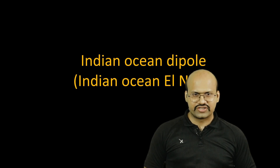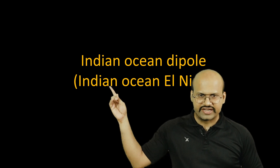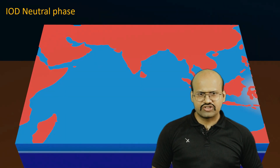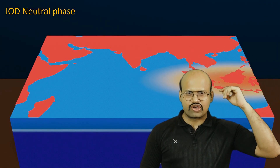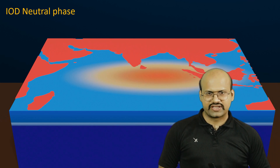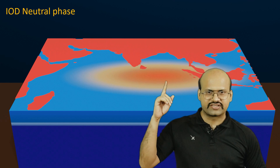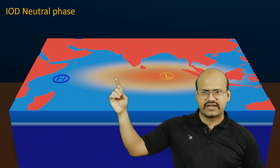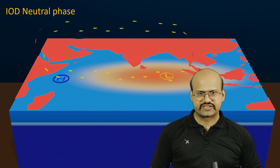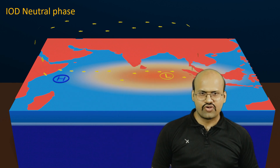Similarly in La Niña, the surface winds change direction with warm water concentrated over the Australian region, the thermocline going downwards in Australia and upwards in the South American region, with rainfall occurring over Australia. Today we are going to discuss about Indian Ocean Dipole, which is very similar to El Niño — that is why it is called the Indian Ocean El Niño. Indian Ocean Dipole has mainly three phases; the first is the neutral phase. Generally hot water enters our Bay of Bengal region from the Pacific Ocean.